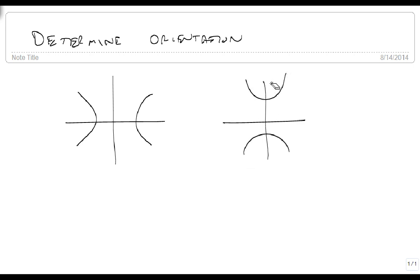What you look for is the positive variable in the standard form. If x squared is positive, then it's going in the x direction. And if y squared is positive, then it's going in the y direction.